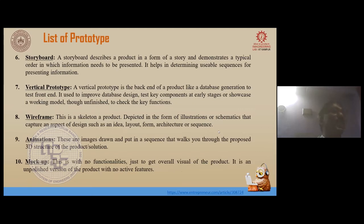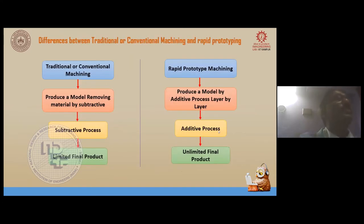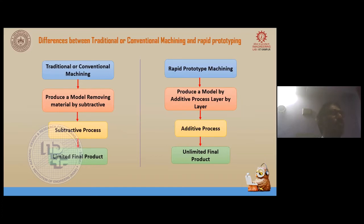We make storyboards, virtual prototypes, wireframes, animations, and mock prototypes. The difference between traditional and rapid prototyping: traditionally, you take a bulk material, design the tool, subtract material, and finally get the product. In rapid prototyping, you build by using building blocks at the required place and space — space-controlled output. It is very energy efficient and rapid prototyping moves toward sustainability.